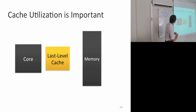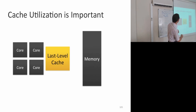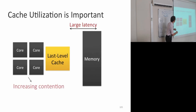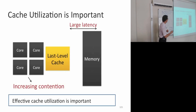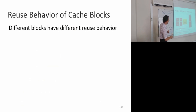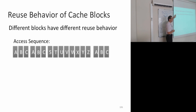Cache utilization is important because we don't want to access memory — there's a lot of energy inefficiency and bandwidth consumption there. As we put more cores, it becomes even more important because of large latency, low bandwidth, and increasing contention. Different blocks actually have different reuse behavior, and we're going to try to distinguish between those blocks.